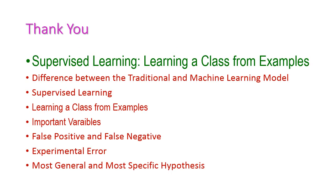Up to this we have covered supervised learning. The first lesson is learning a class from samples. We learned the difference between traditional and machine learning models, what is supervised learning, the important variables x, r, and hypothesis H(x), false positive and false negative, experimental empirical errors epsilon, and most general and most specific hypothesis — that is generalization and specialization of samples from the given example. Thank you.